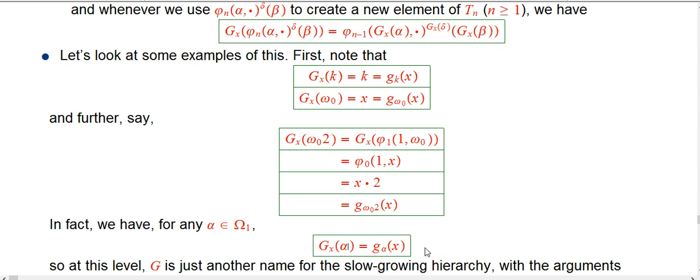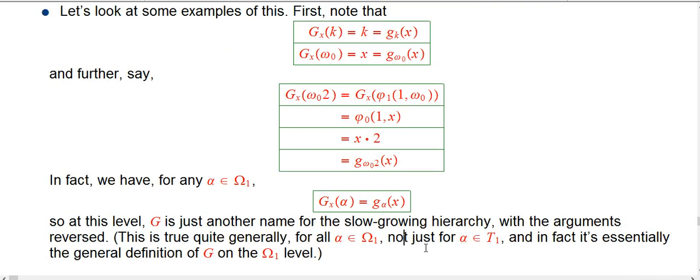the collapse of an alpha with this additional parameter x, is exactly just the slow growing hierarchy at level alpha applied to x. So the arguments are reversed, but it's just really the same function.